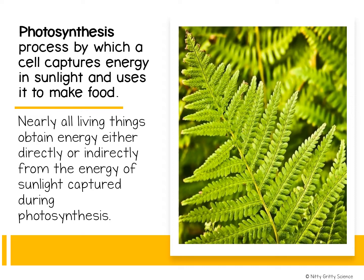But plants such as grass and trees, along with other organisms such as algae or bacteria, obtain their energy in a different way. These organisms use the energy in sunlight to make their own food. The process by which a cell captures energy in sunlight and uses it to make food is called photosynthesis. Nearly all living things obtain energy either directly or indirectly from the energy of sunlight captured during photosynthesis. The acorn that the squirrel is eating grew in a tree that made its own food during photosynthesis. When the squirrel eats the acorn, it gets energy that has been stored by the tree. The squirrel obtained the sun's energy indirectly from the energy that the tree obtained through photosynthesis.